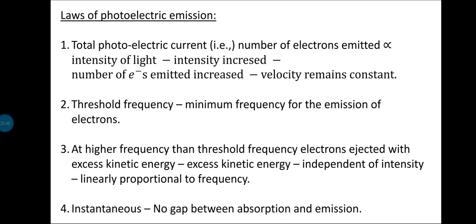For example, if the threshold frequency is 50, and you give 30 or 40, electrons will not be ejected. Only when you reach a frequency equal to or above 50 are electrons ejected. There is a minimum frequency necessary for emission — that is the threshold frequency. Each metal has its own threshold frequency, and for alkali metals it has been shown to be low.